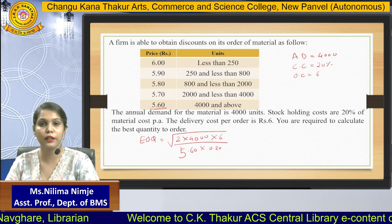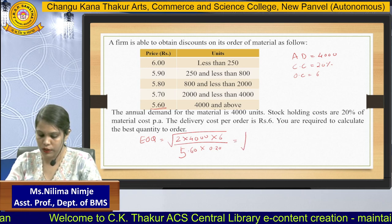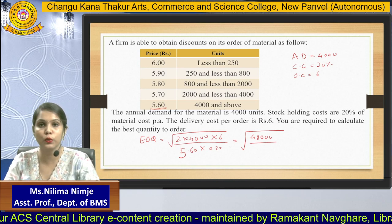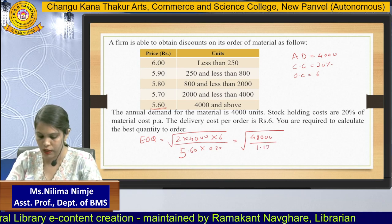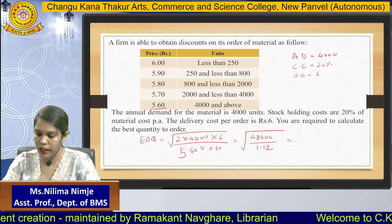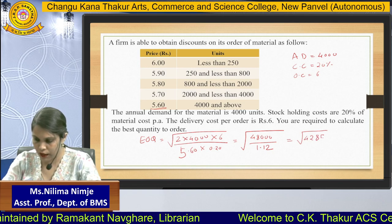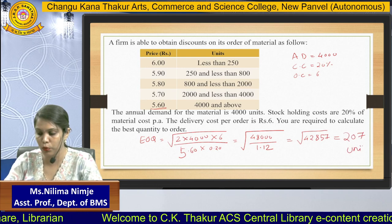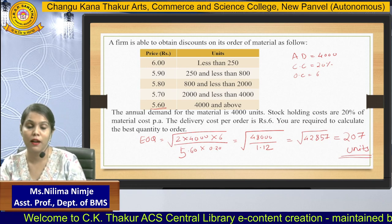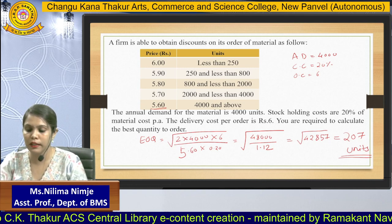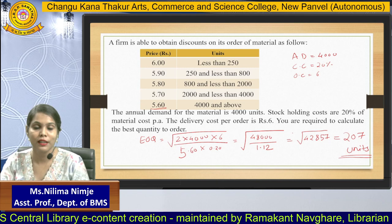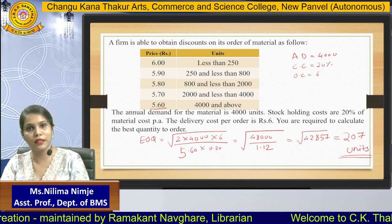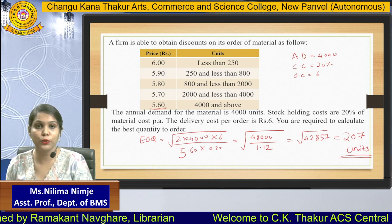Calculating: numerator = 4,000 × 2 × 6 = 48,000; denominator = 5.60 × 0.20 = 1.12. Dividing gives 42,857; square root gives approximately 207 units. However, the question asks for the best quantity to order, so this EOQ alone is not sufficient — we need to evaluate all discount levels.